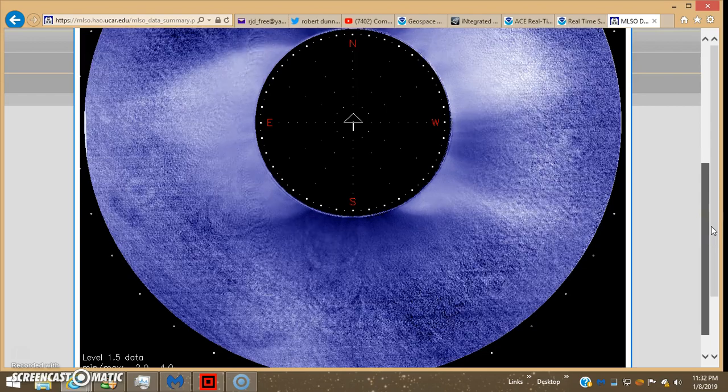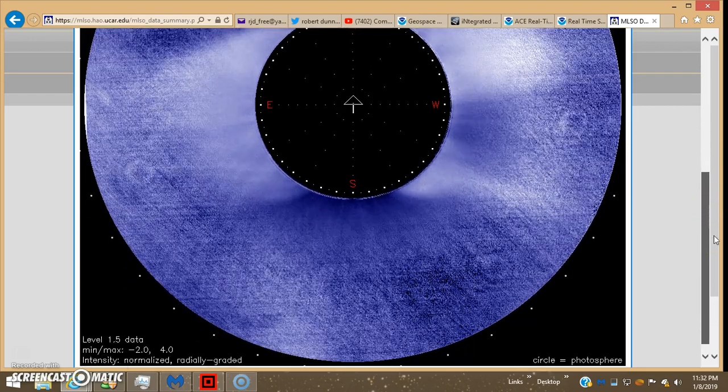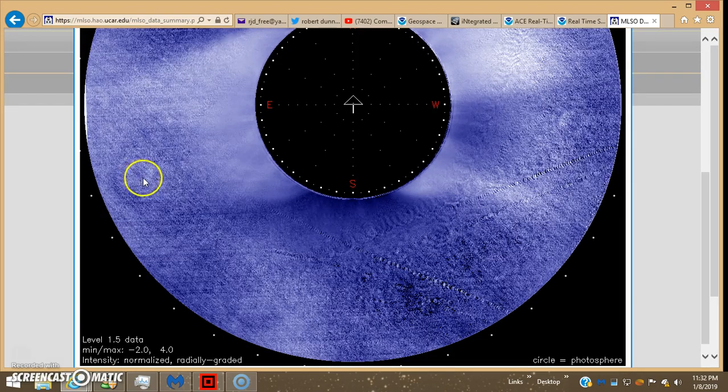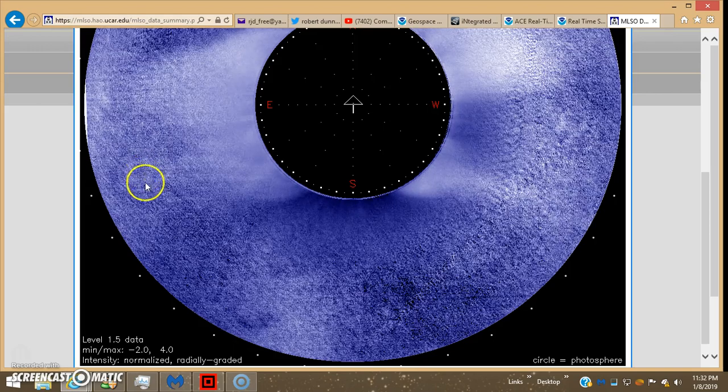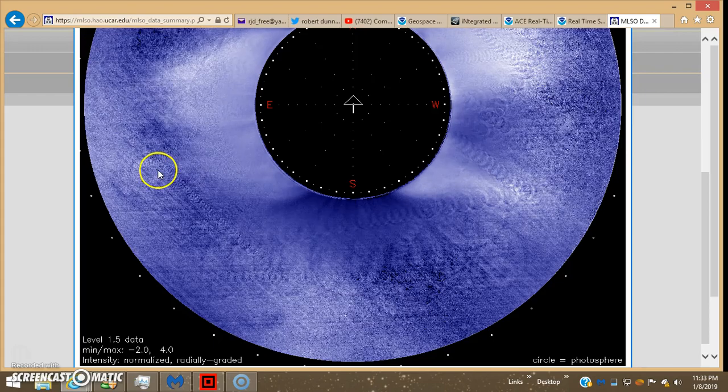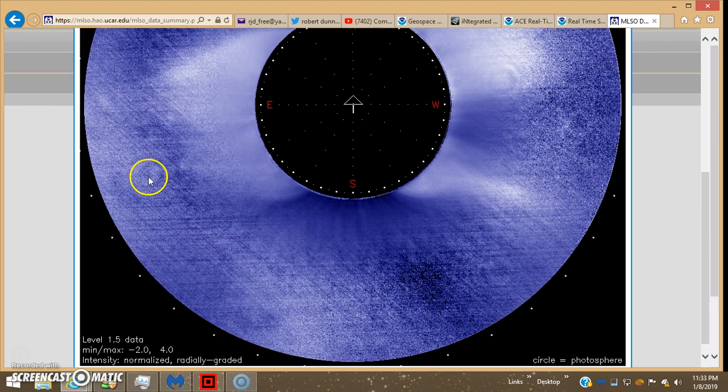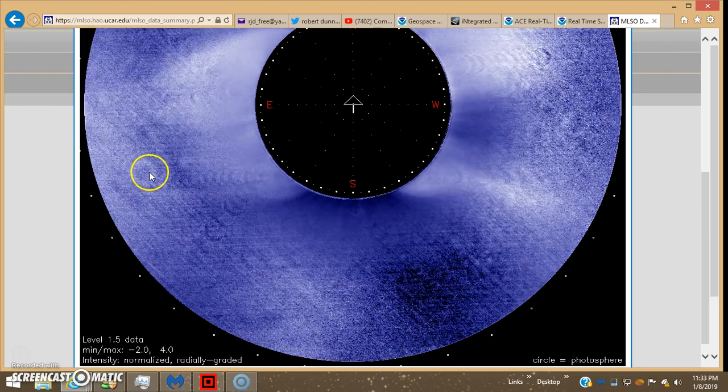Debris field from the Nibiru-Nemesis system. Got a big planet type object over here. Like I mentioned in the video this morning, I think these are just like magnetic concentric circles.